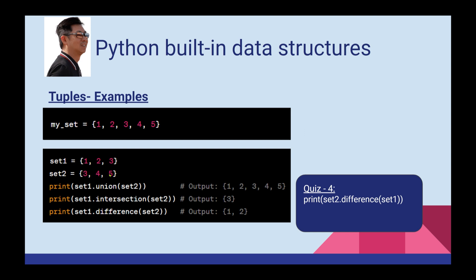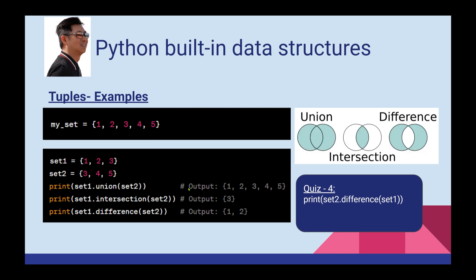Because sets remove duplicates — so even if both sets contain 3, the union result is {1, 2, 3, 4, 5} with no duplicate 3. The next operation is intersection. You can use set1.intersection(set2).